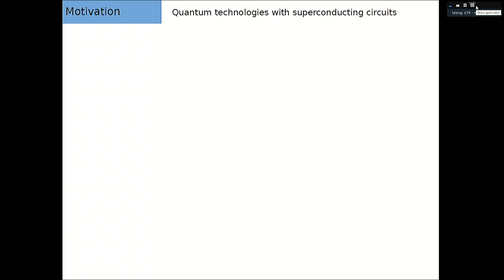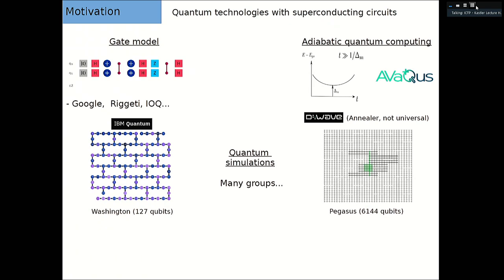So, I want to give a bit of motivation for why I'm going to go through all these troubles. The motivation is that we want to improve quantum technologies using superconducting circuits. The quantum technologies we would like to improve are quantum computers, as this work is part of the Abacus project. The quantum computer follows this gate model — you apply gates to qubits, including two-qubit gates.